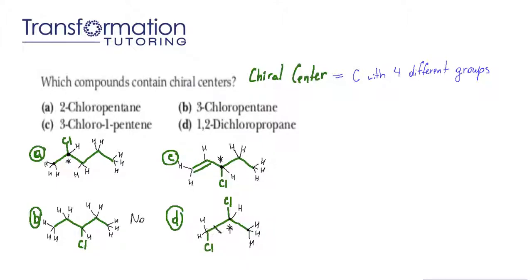We can confirm this because it has four different groups: a chlorine, a hydrogen, the carbon with the chlorine on the left, and the carbon without the chlorine on the right. This is Maya from Transformation Tutoring, and I'll see you for more organic chemistry fun next time.